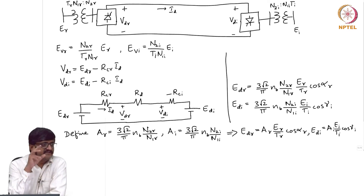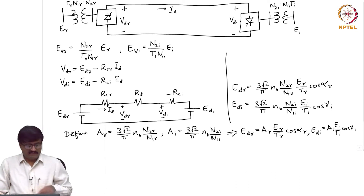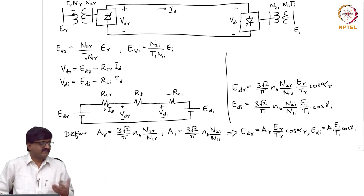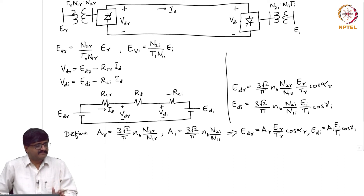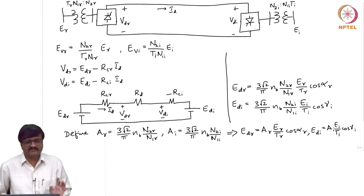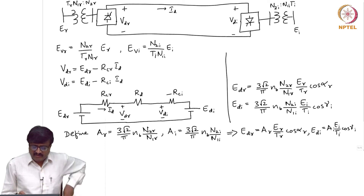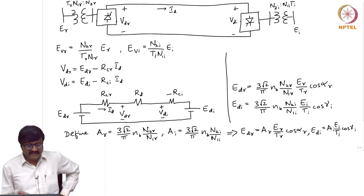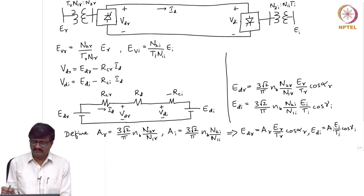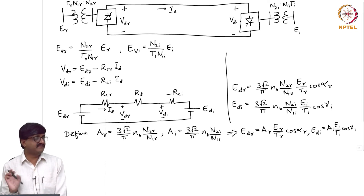Note that E_R is not a constant — it depends on the AC system on the rectifier side and may change with time, though around its nominal value. Similarly, E_I is not constant, which is why they are not included in the definitions of A_R or A_I. Coming back to the equivalent DC circuit, the current I_D can be written as the difference between the source voltages E_DR and E_DI, divided by the effective resistance R_CR plus R_D minus R_CI.